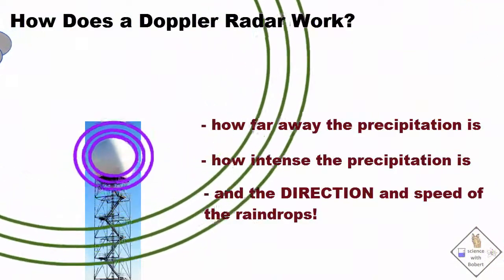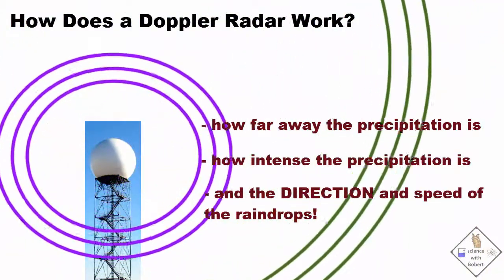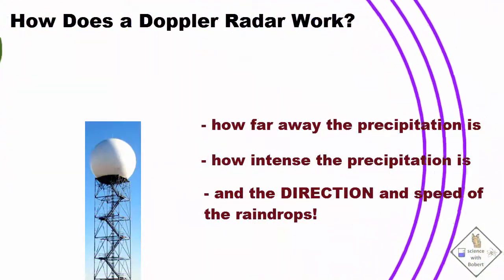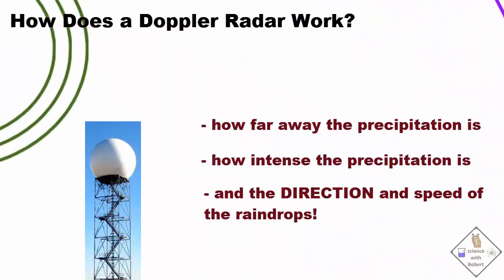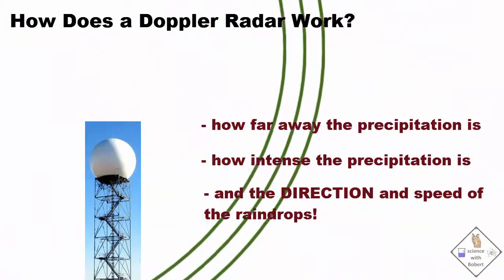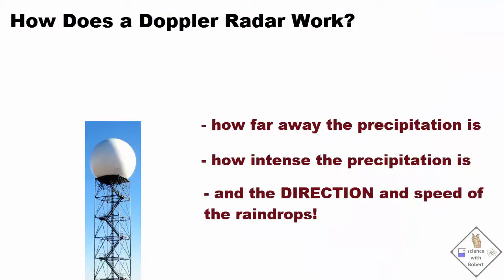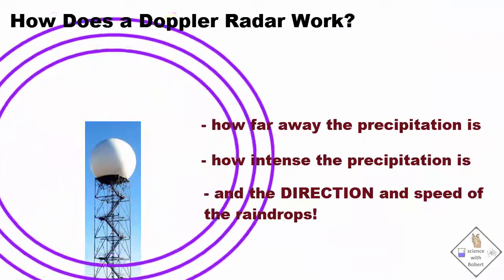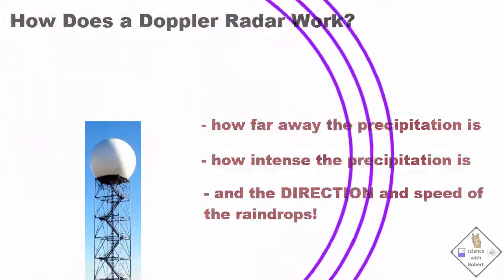The radar system determines how far away and intense the precipitation is, and uses the Doppler effect to determine how fast toward or away the precipitation is moving from the radar system.